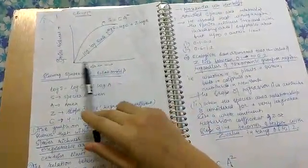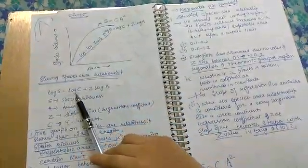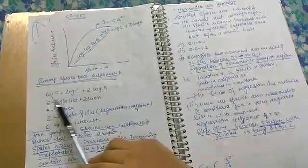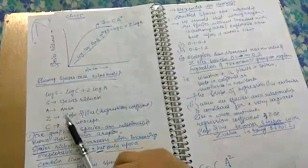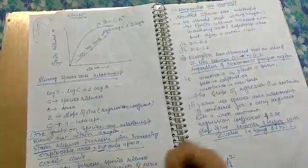First is the graph of species richness and area, which shows the species-area relationship. Log S equals log C plus Z log A. S is species richness, A is area, Z is slope of line or regression coefficient, and C is y-intercept.